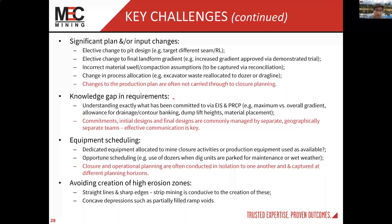There's a knowledge gap in requirements — a gap in communication of what's actually been committed in an EIS and what's committed in the progressive rehabilitation closure plan. Things that have often been confusing: maximum versus overall gradients on slopes — very similar to overall slope angle of the wall versus the individual face angle. Things get designed at a committed 15% slope, the whole dump gets designed based on 15%, and there's no allowance for flat sections for drainage banking or anything of that nature. Commitments, initial designs, and final designs are commonly managed by separate teams that are geographically separated — that communication is a key piece of this. It's no different to any other part of the plan, it's just that it can catch you out in a big way if not done effectively.